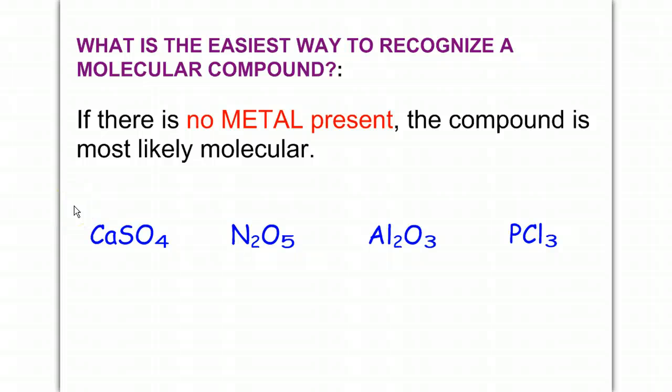So in these examples, calcium is a metal, so this compound is ionic. And so we will not use these following naming rules. N2O5, that's a non-metal plus another non-metal. So because this is covalent, we will use the naming rules that I'm about to show you.